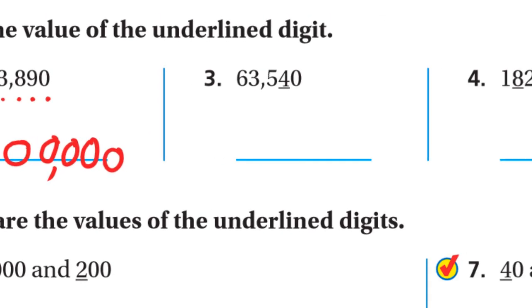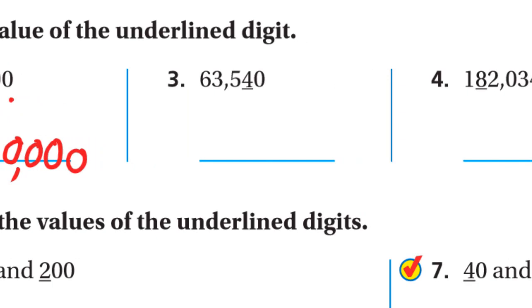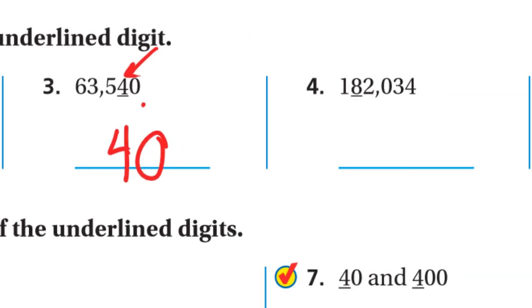The next one: the value of 4. We write the 4 and make all digits to the right zeros. The 4 is in the tens place, so it's four tens, or 40.